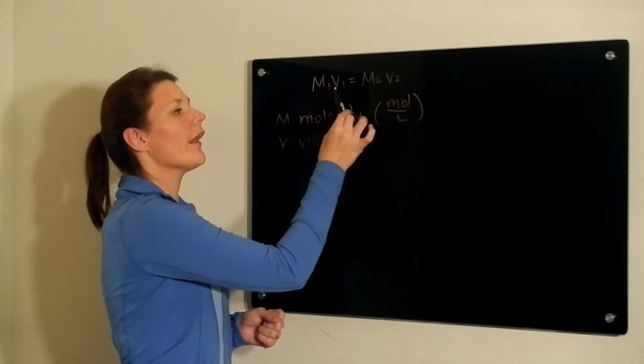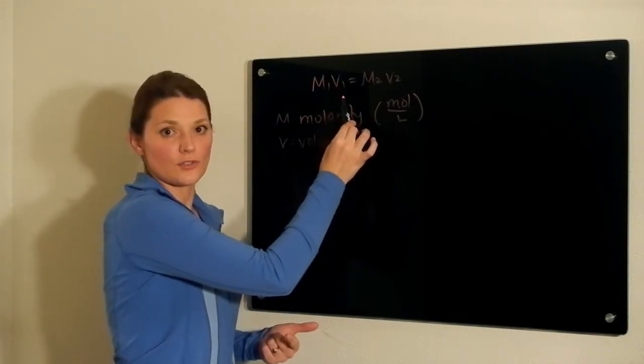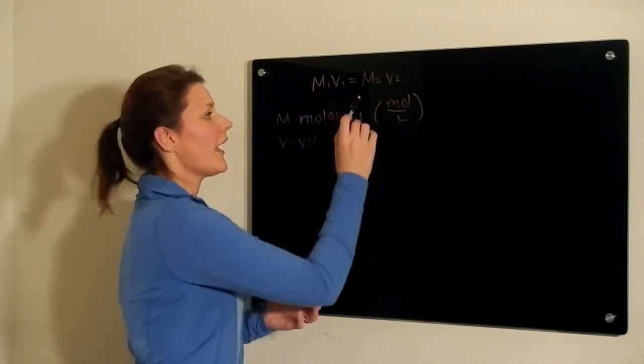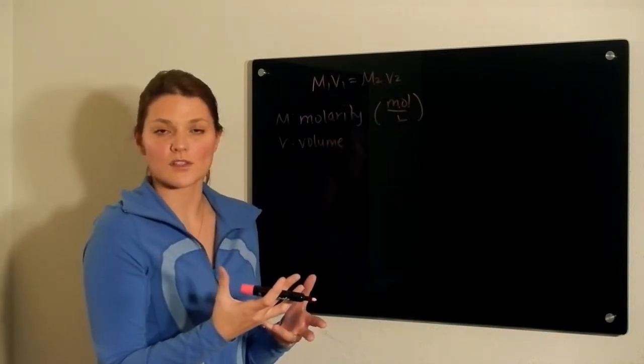So if I use milliliters there, I also want to use milliliters for the alternate volume. One represents the initial concentration and volume, and two represents the final concentration and volume.